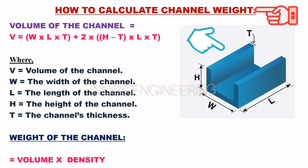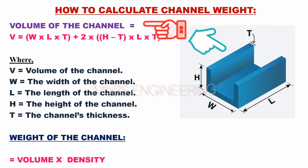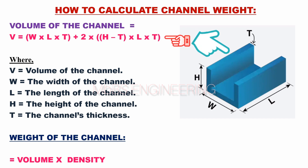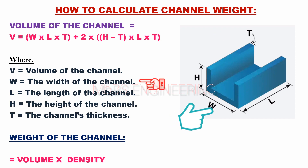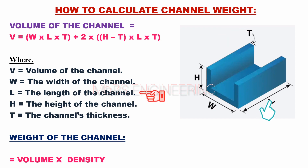We learn how to calculate the volume and weight of channel materials. The volume of the channel: V equals W into L into T, plus 2 multiplied by (H minus T) into L into T. Where V is the volume of the channel, W is the width of the channel profile, T is the thickness of the channel profile, L is the channel profile's length, and H is the height of the channel profile.